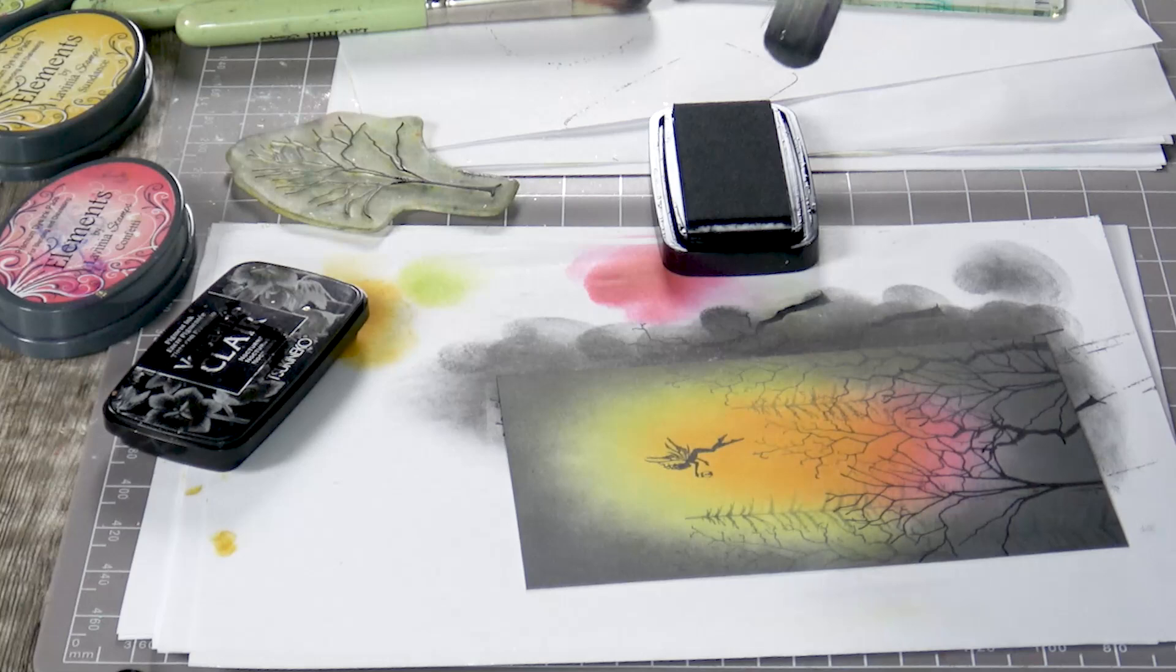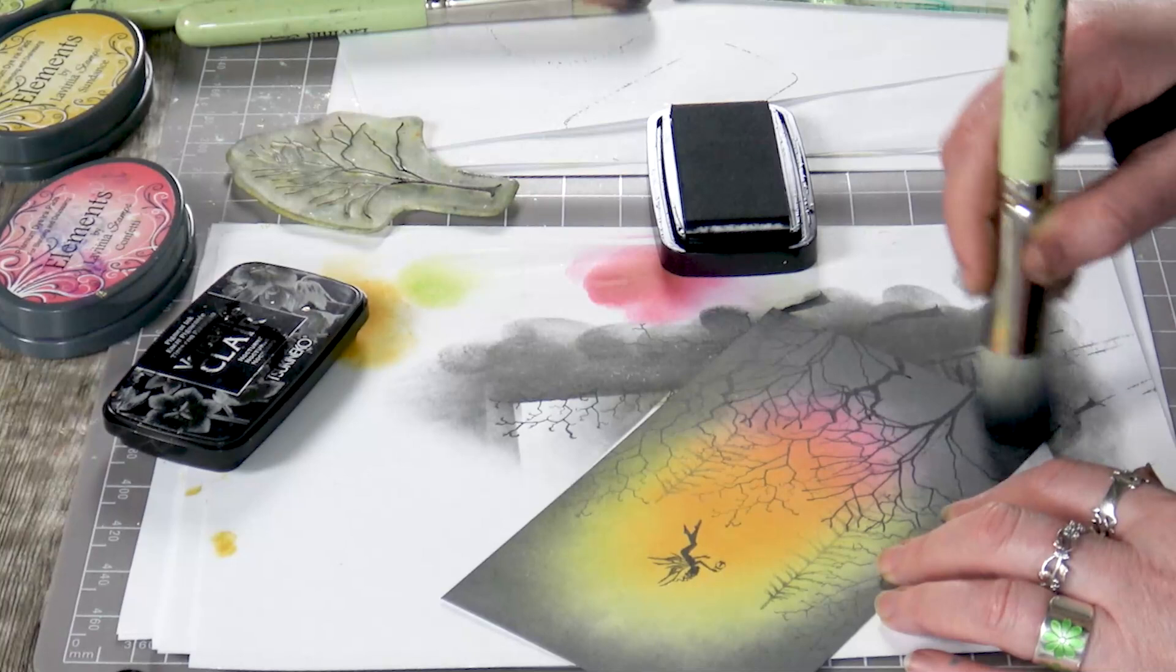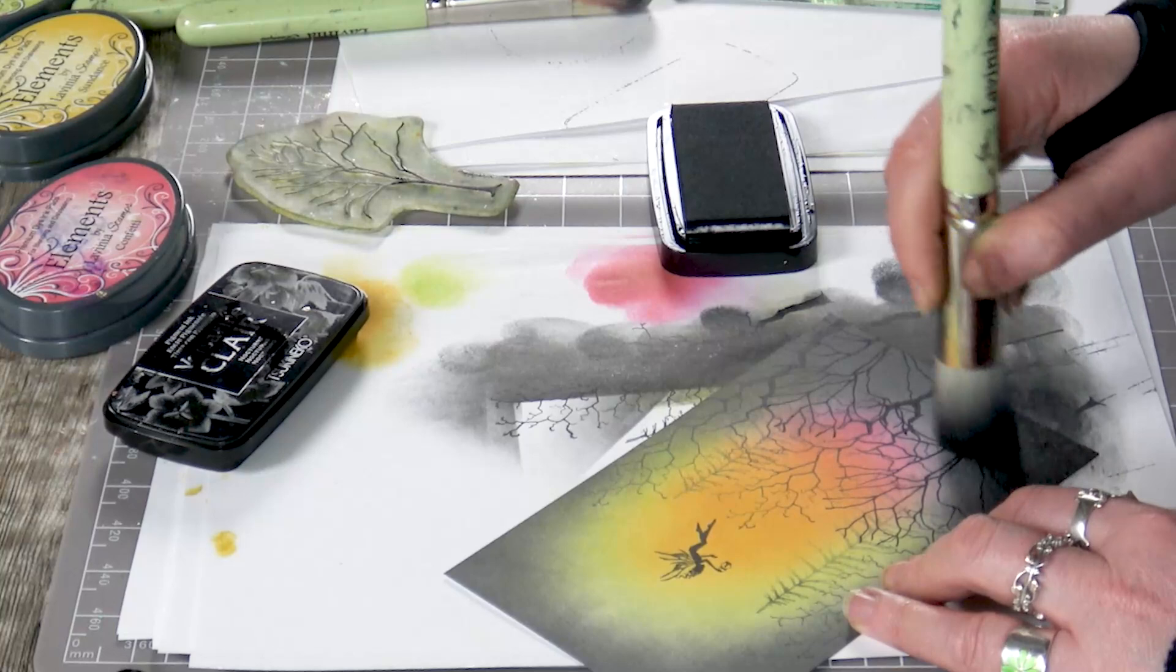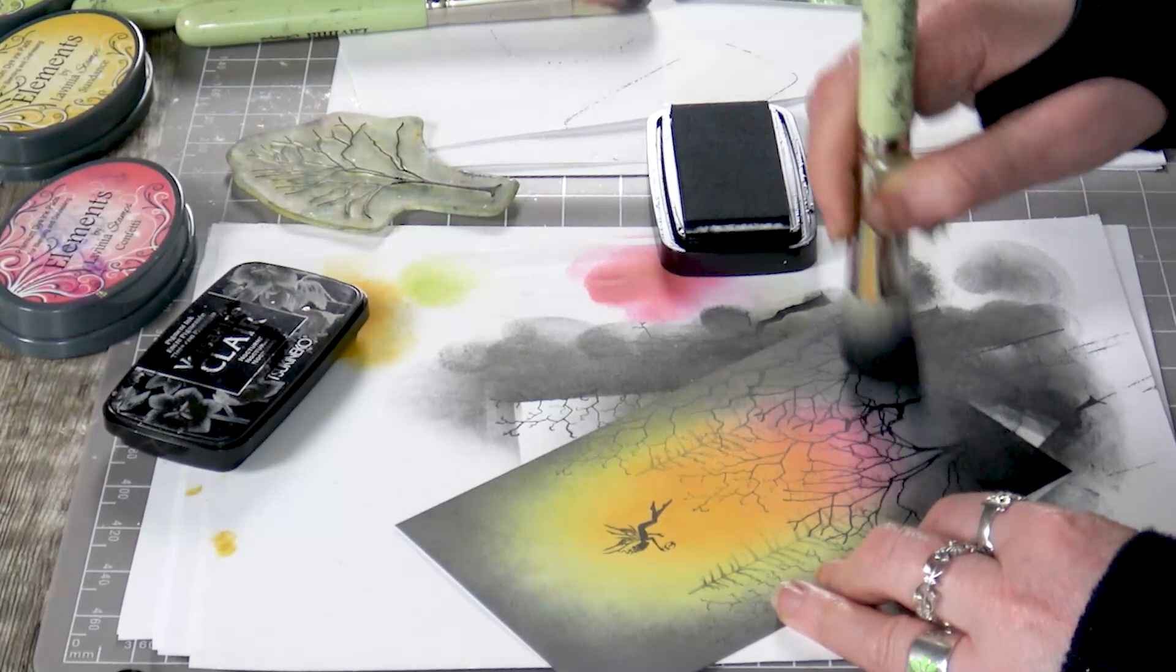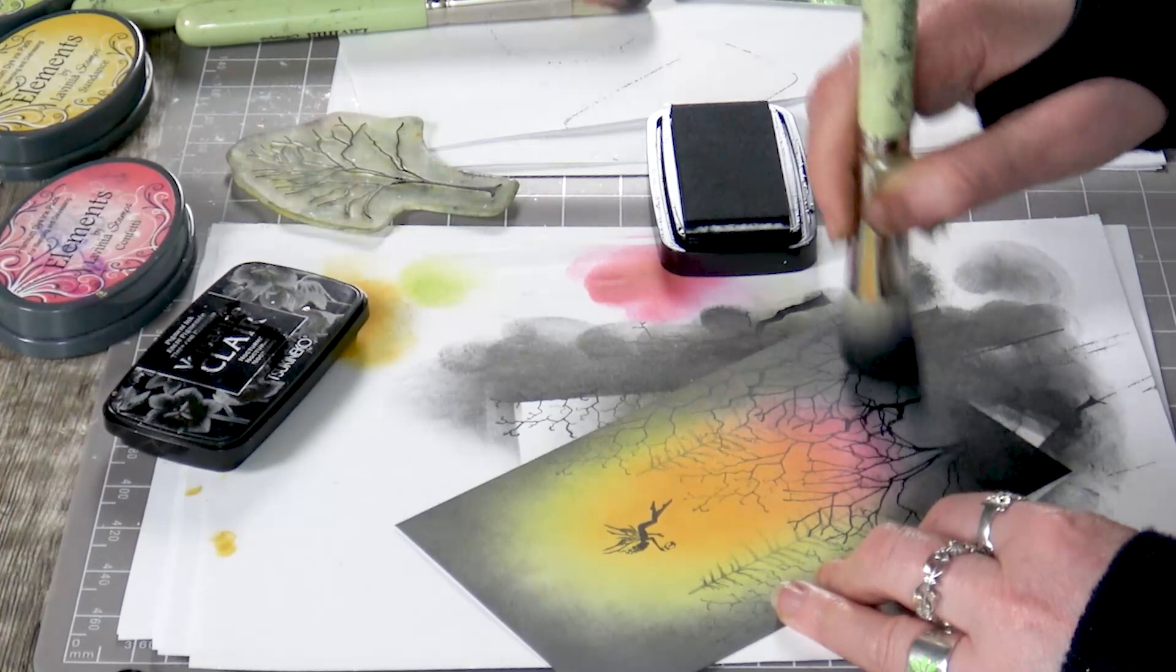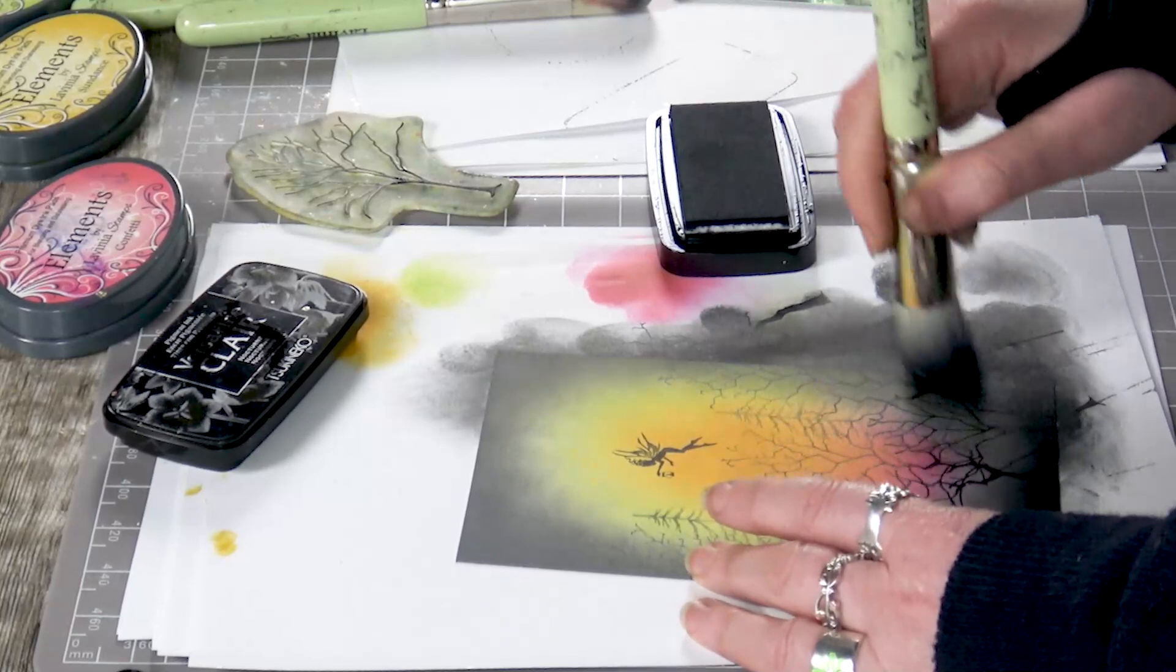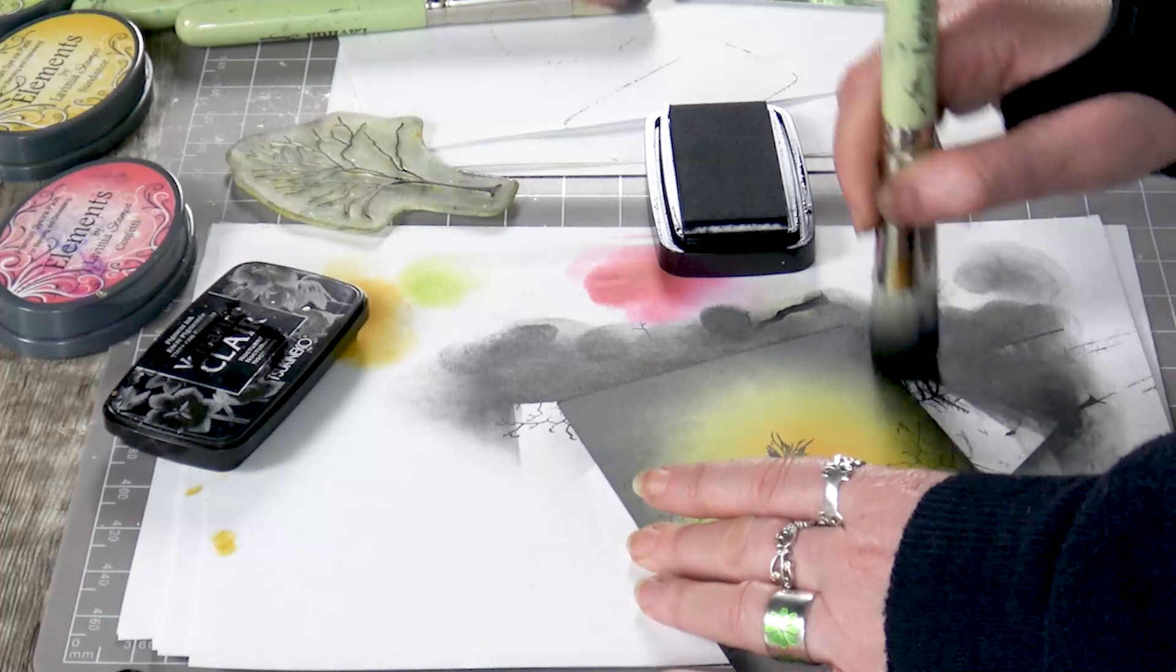So now I'm going to use the VersaFine Claire Nocturne with my stencil brush, just to give a little bit more depth. Remembering that this is an oil-based ink, so it's going to be darker than the elements. The elements are quite a chalky ink, so you can see straight away how that pulls your eye now into the centre by just bringing in that depth of colour around the edge.